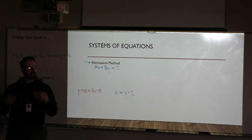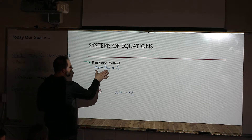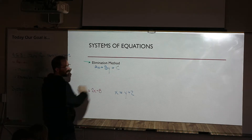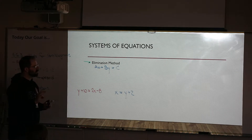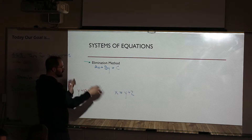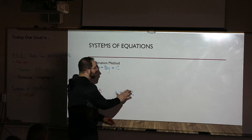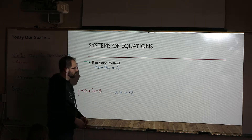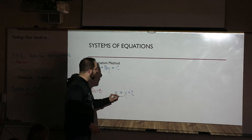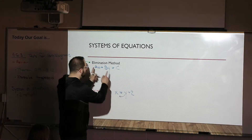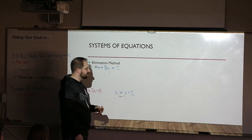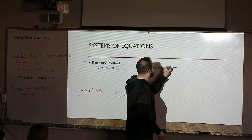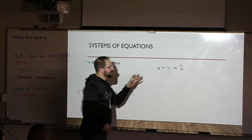We're going to talk about the elimination method first. To use elimination, you need to get both equations into standard form: AX plus BY equals C. The A, B, and C are just numbers — you want X and Y on the same side, and the lone number by itself on the other side. For the blue equation, I just need to subtract Y to the other side so X's and Y's are on the same side.